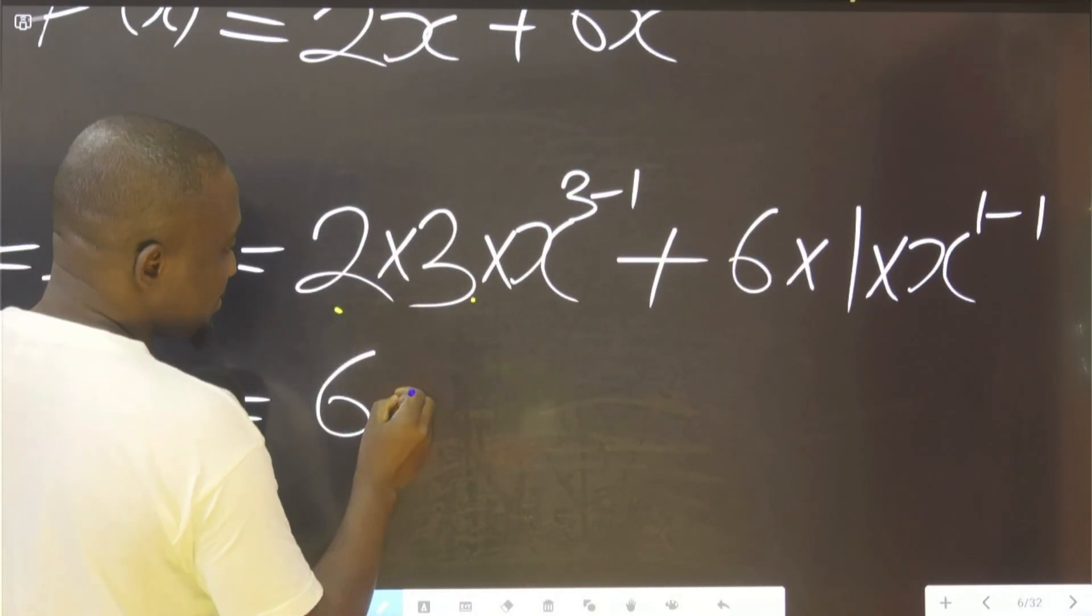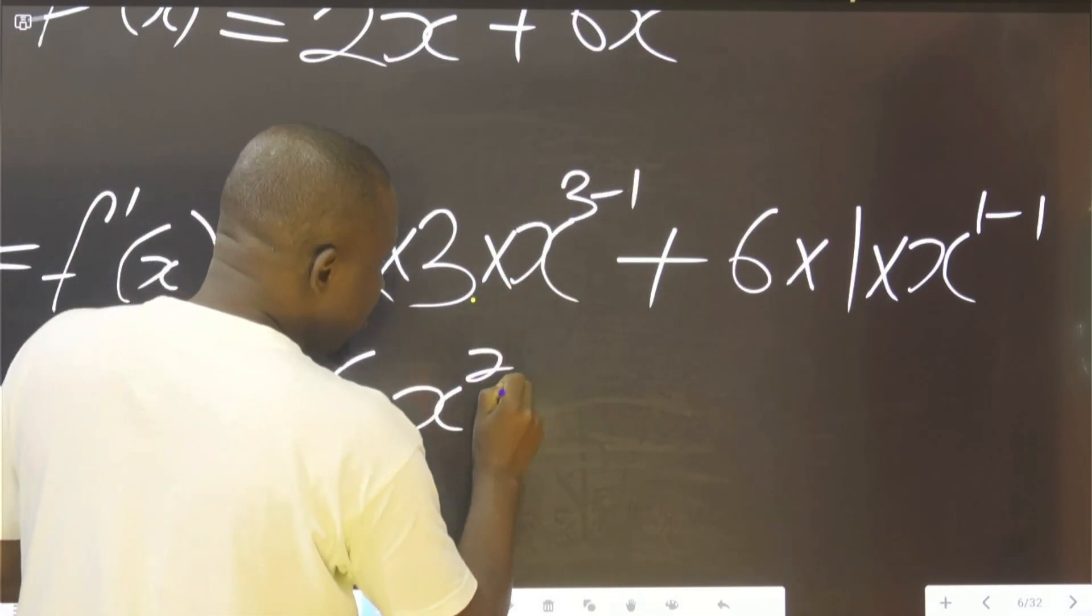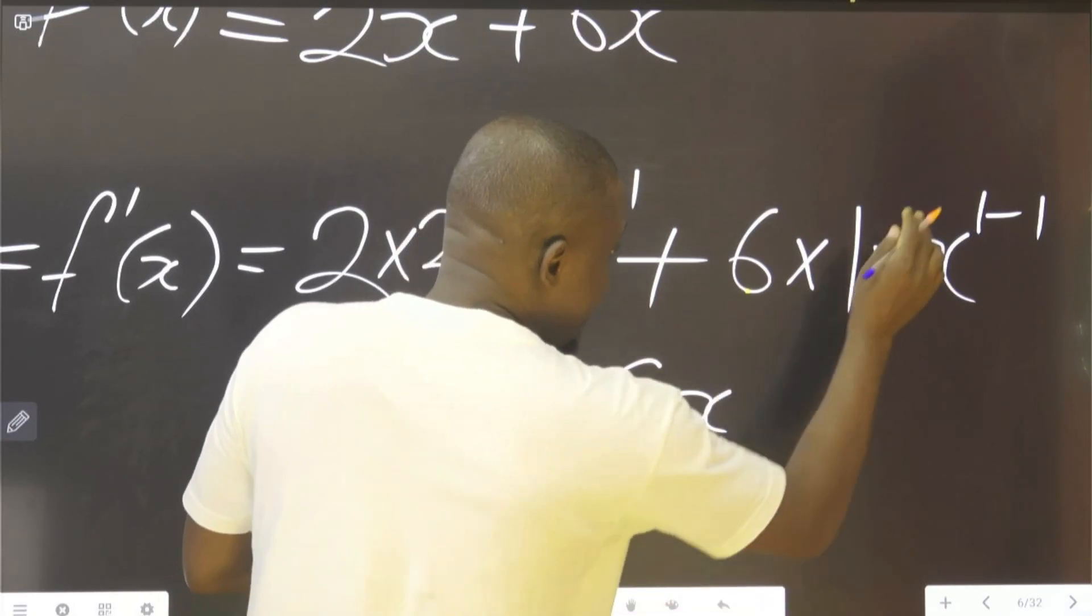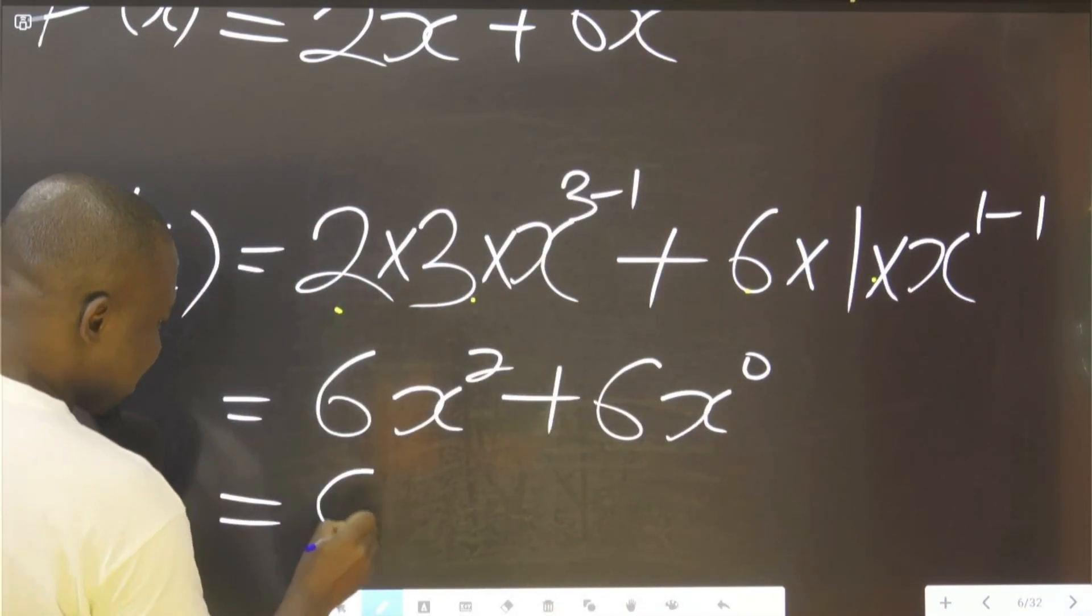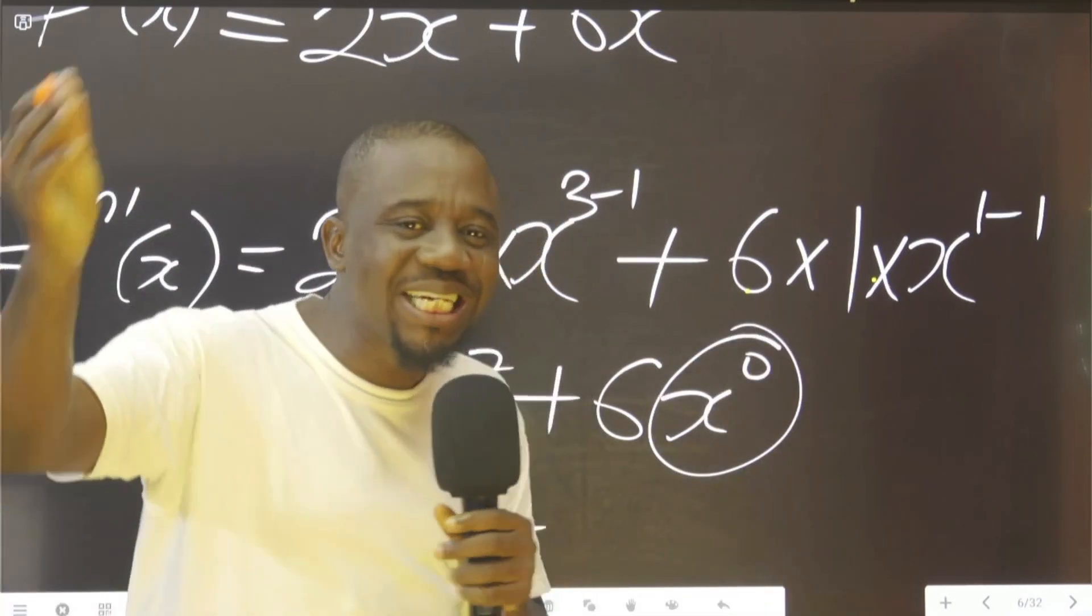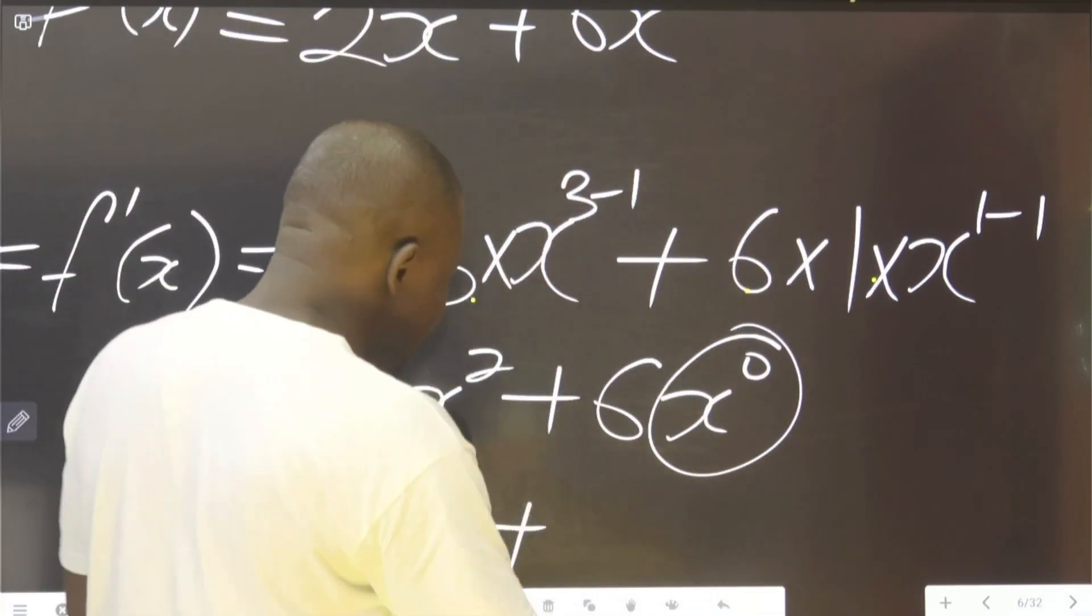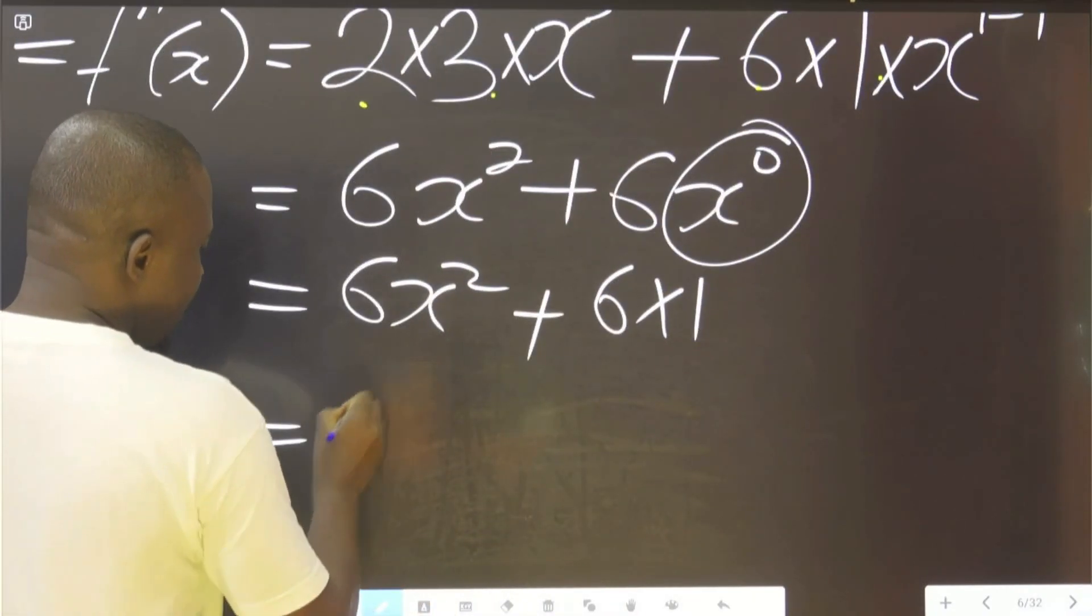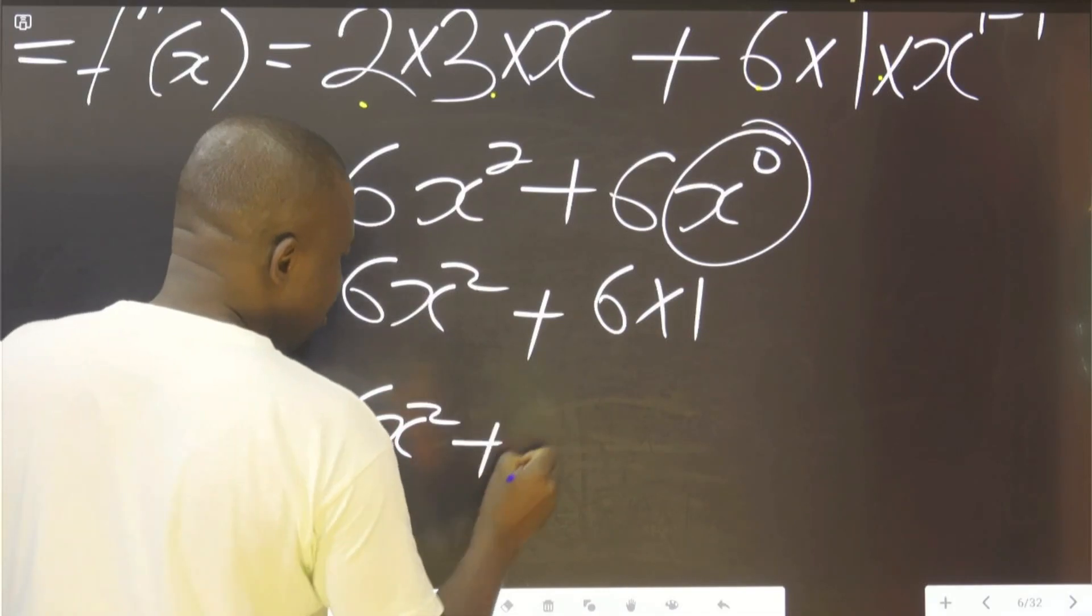Now it's just basic arithmetic. This multiplied by this is six, this minus this is two. This multiplied by this is six, this minus this is zero. Equal to 6x² plus... anything raised to power zero is one, it means six times one. Finally, it's 6x² plus 6.